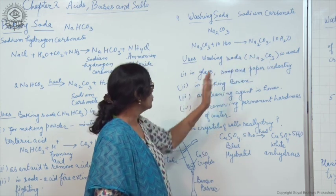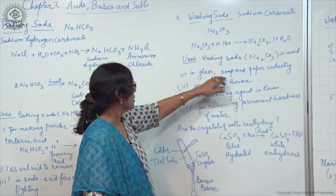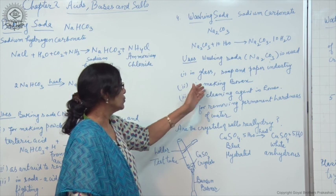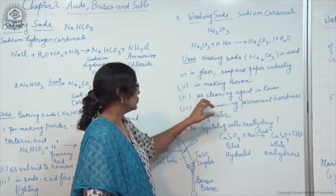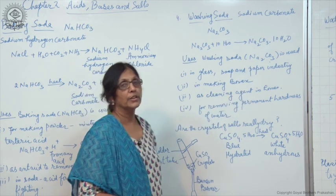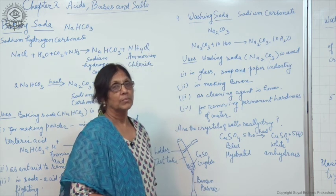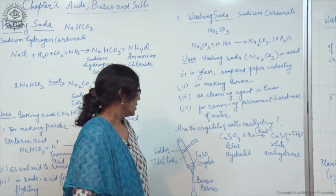Washing soda is used in various places like in glass, soap, paper, and water industry. It is used in making sodium compounds like borax and used as a cleansing agent in homes. It also removes permanent hardness of water and makes the permanent hard water soft.